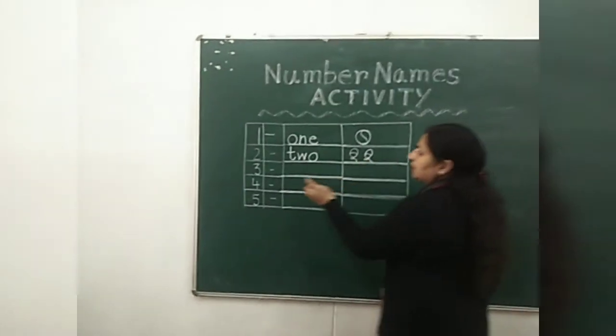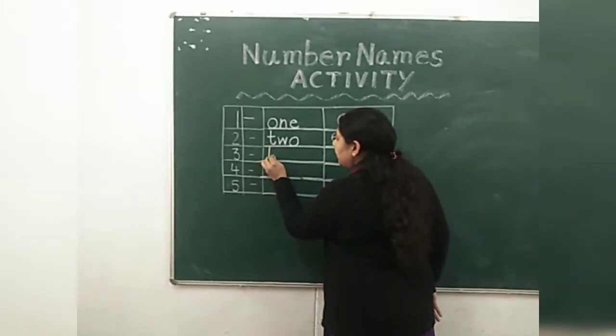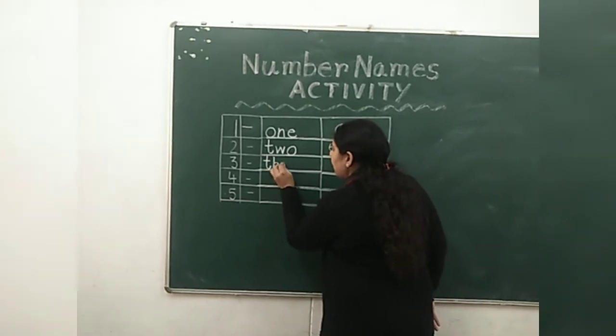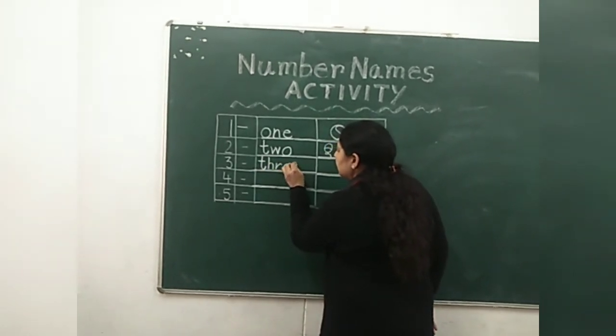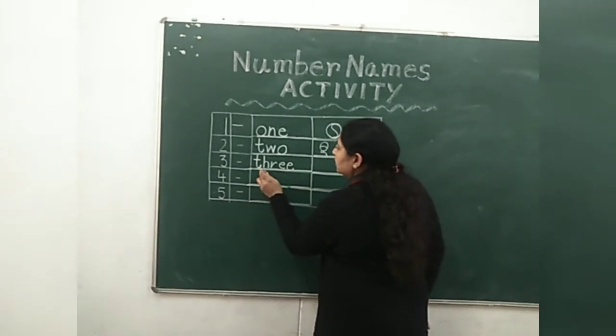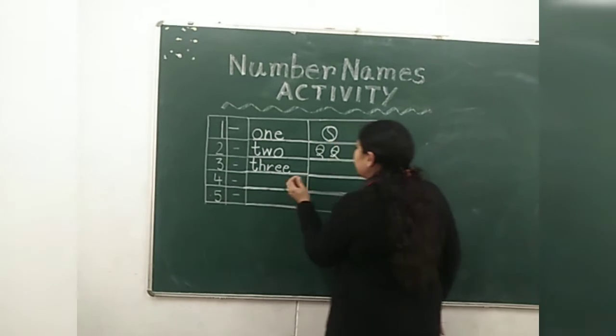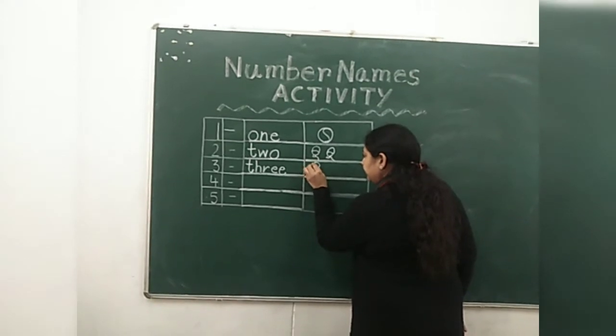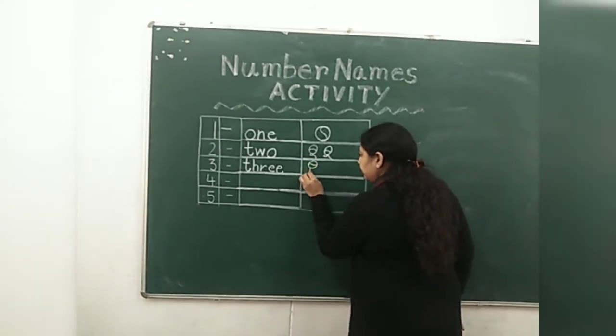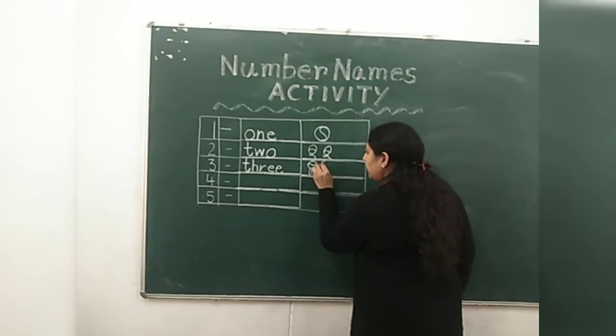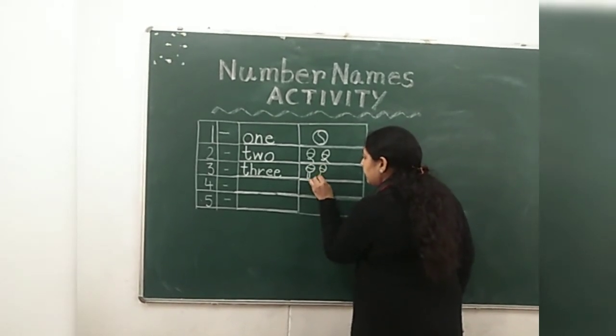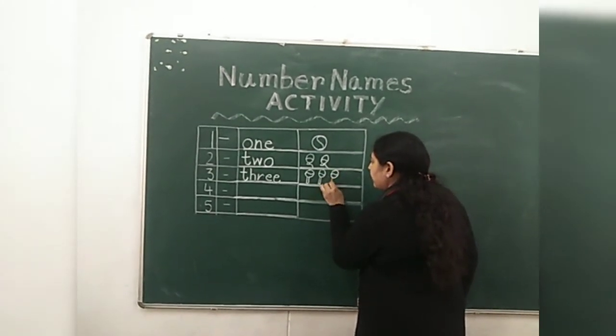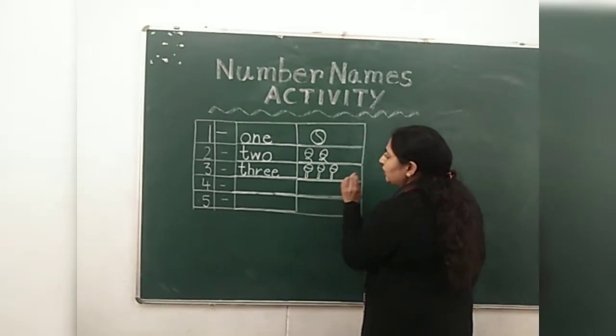One, two, three. The number name of three is T-H-R-E-E. Three. We will draw three objects. And we will draw three lollipops. One, two, three.